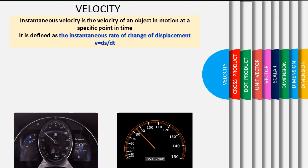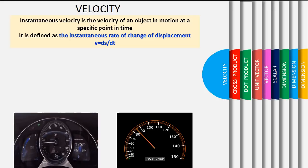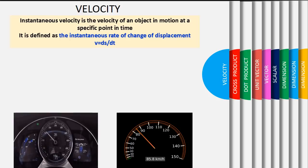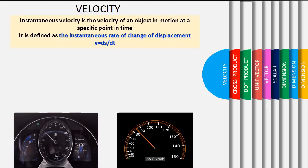The reading on the meter is keep changing from one value to another value at specific time. This indicates the instantaneous velocity of the object.